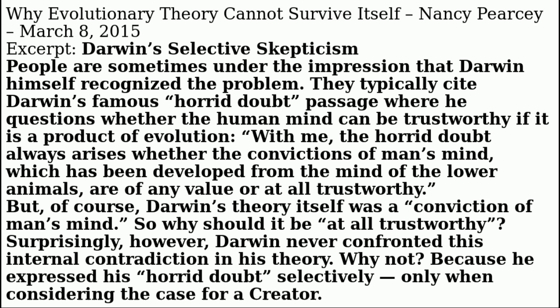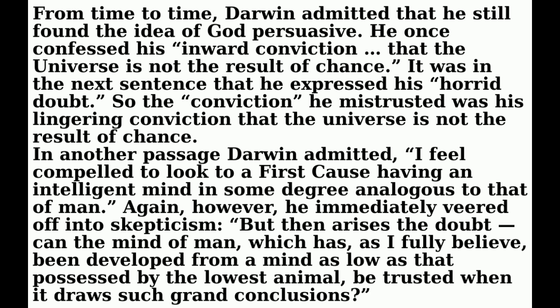The surprising thing is that Darwin never actually confronted this internal contradiction in his theory. The reason is that he expressed his horrid doubt selectively — only when he was considering the case for a creator. You have to go back behind the pull quotes and look at the context to see this. For example, Darwin admitted, even later in life, that he still found the idea of God persuasive. In one personal letter he said: 'I have an inward conviction that the universe is not the result of chance.' And it was exactly in that context — in fact, the very next sentence — that he expressed his horrid doubt.